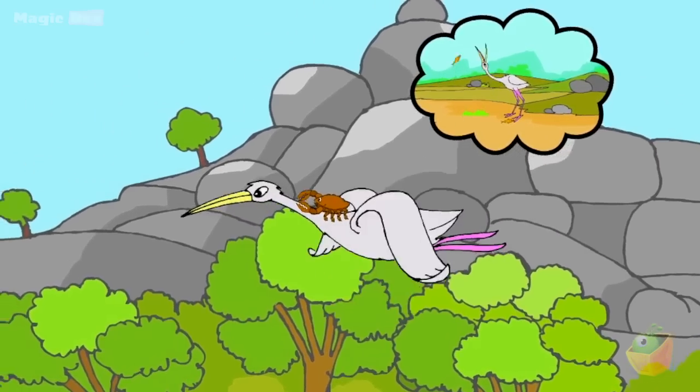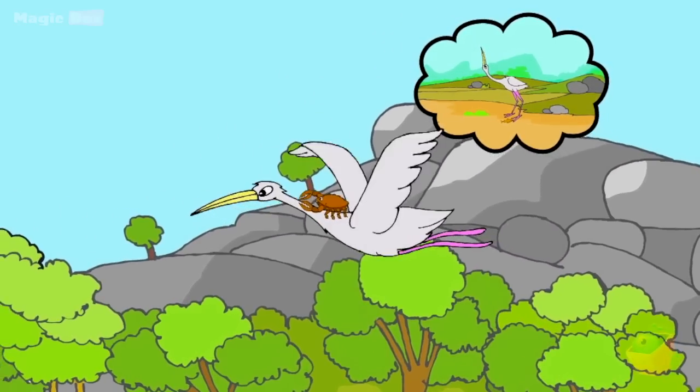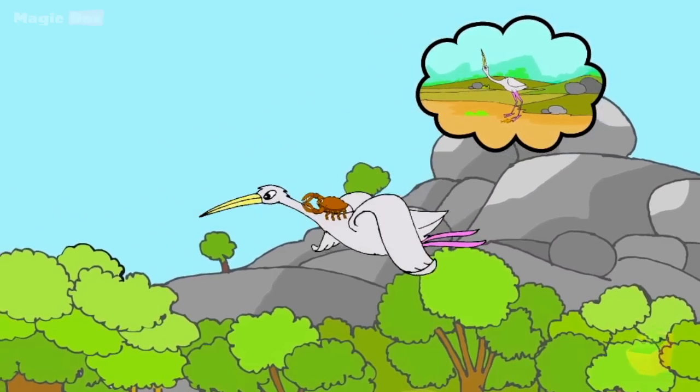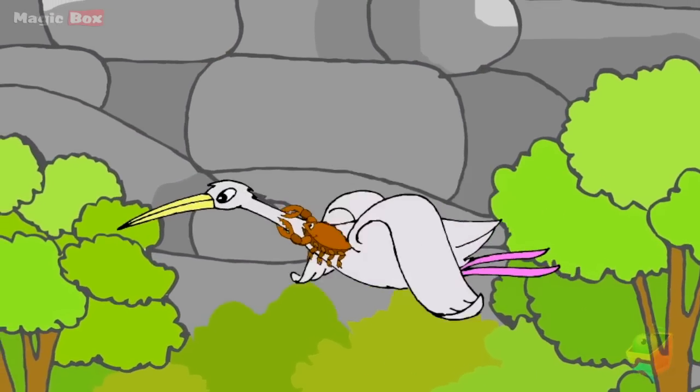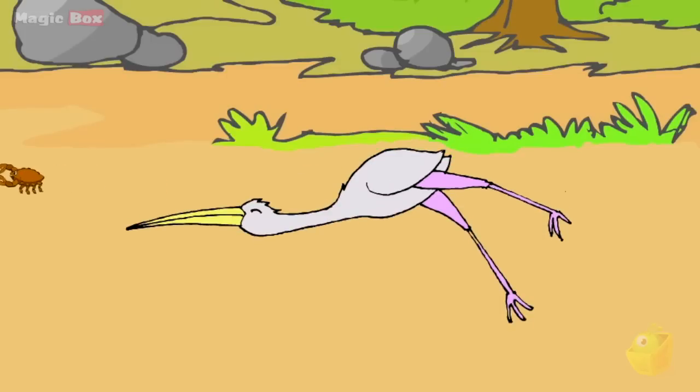It thought, before it kills me to eat, I've got to finish it off. The crab decided. All of a sudden, the crab crushed the crane's neck with its sharp claws and killed it.